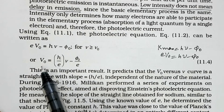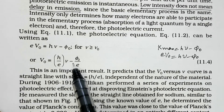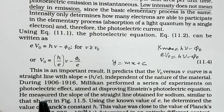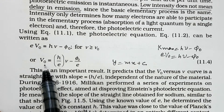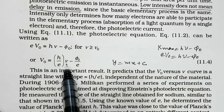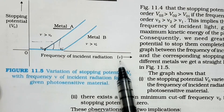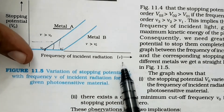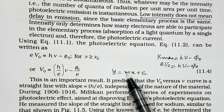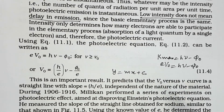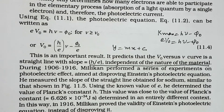Dividing both sides by e, we get V₀ = (h/e)ν − φ₀/e. This equation is of the form y = mx + c, a straight line. If we plot V₀ on the y-axis and frequency on the x-axis, we get a straight line. The slope m is h/e, which is Planck's constant divided by the elementary charge. This slope is a constant value independent of the nature of the material.